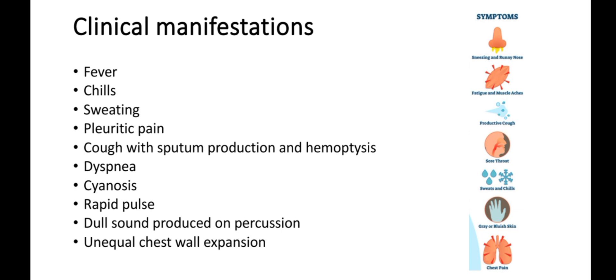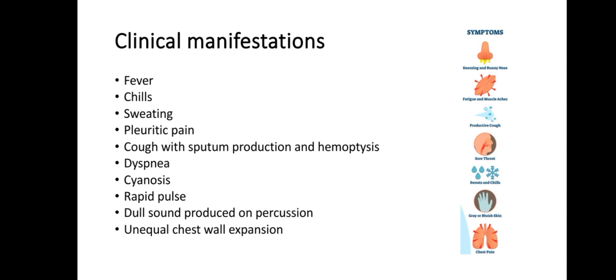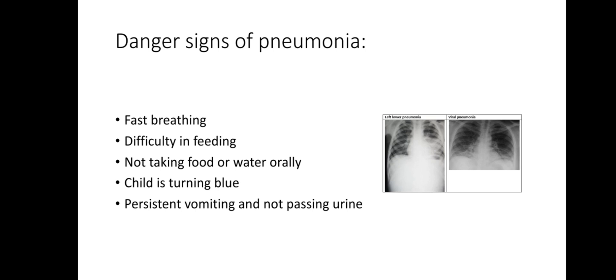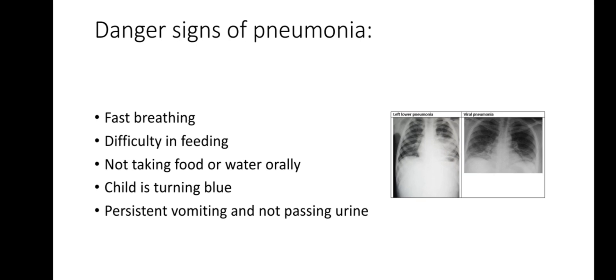Clinical manifestations of pneumonia include: fever, chills, sweating, pleuritic pain, cough with sputum production, hemoptysis, dyspnea, sinusitis, rapid pulse, and dull sound on percussion. Danger signs include: fast breathing, difficulty in feeding, child turning blue, persistent vomiting, and not passing urine.